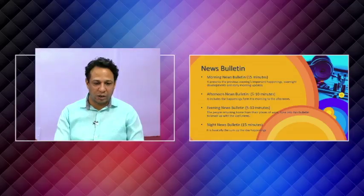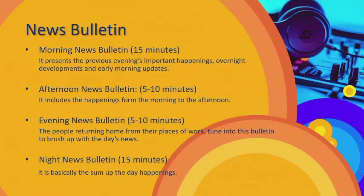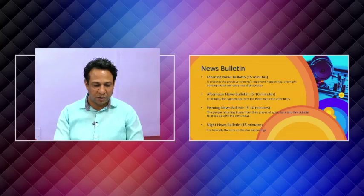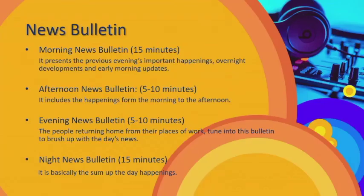Morning news bulletin: the duration is 15 minutes. It presents the previous evening's important happenings, overnight developments and early morning updates. Afternoon news bulletin includes the happenings from the morning to the afternoon. Evening news bulletin: the duration is 5 to 10 minutes. The people returning home from their places of work tune into this bulletin to catch up with the day's news. Night news bulletin: the duration is 15 minutes. It is basically a sum up of the day's happenings.